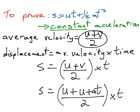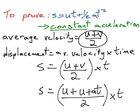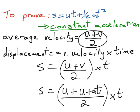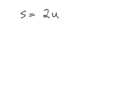Our next step is to tidy up what is inside the brackets. So that will give us 2u, we still have the at on the top of the fraction, and we still have that divided by 2.